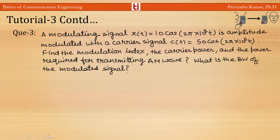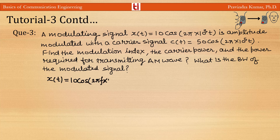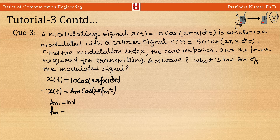Question 3: A modulating signal x(t) = 10·cos(2π × 10³·t) is amplitude modulated with a carrier signal c(t) = 50·cos(2π × 10⁵·t). Find the modulation index, carrier power, power required for transmitting the AM wave, and bandwidth of the modulated signal. From the modulating signal equation x(t) = Am·cos(2π·fm·t), we get Am = 10 volt and fm = 10³ Hz = 1 kHz.